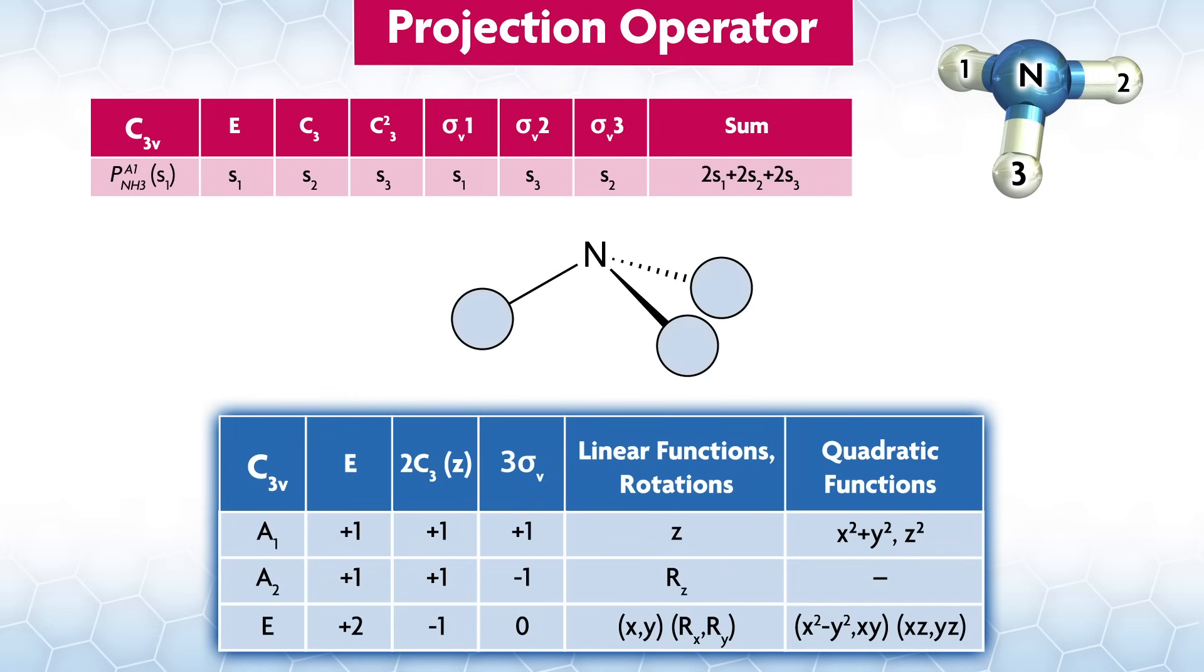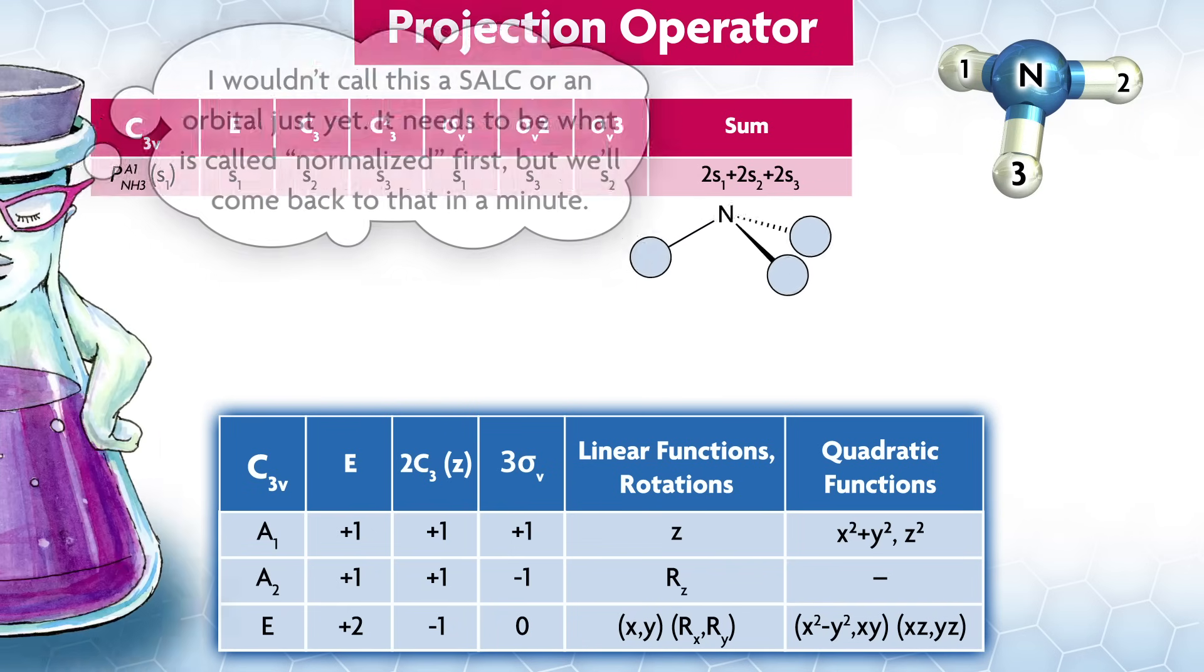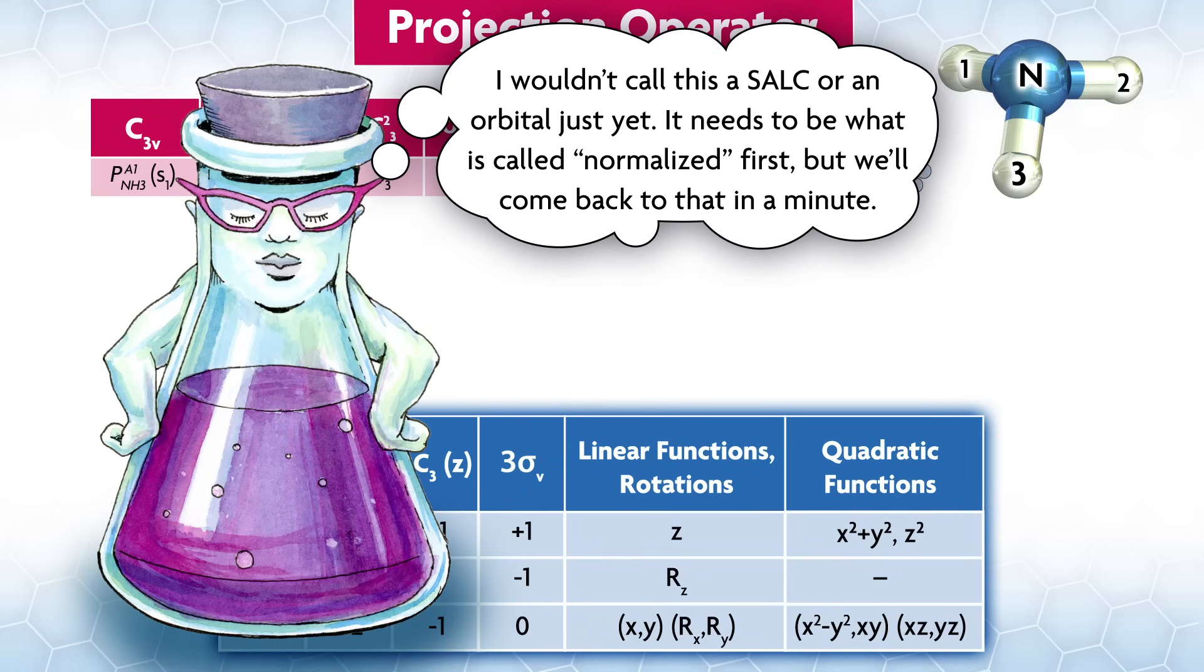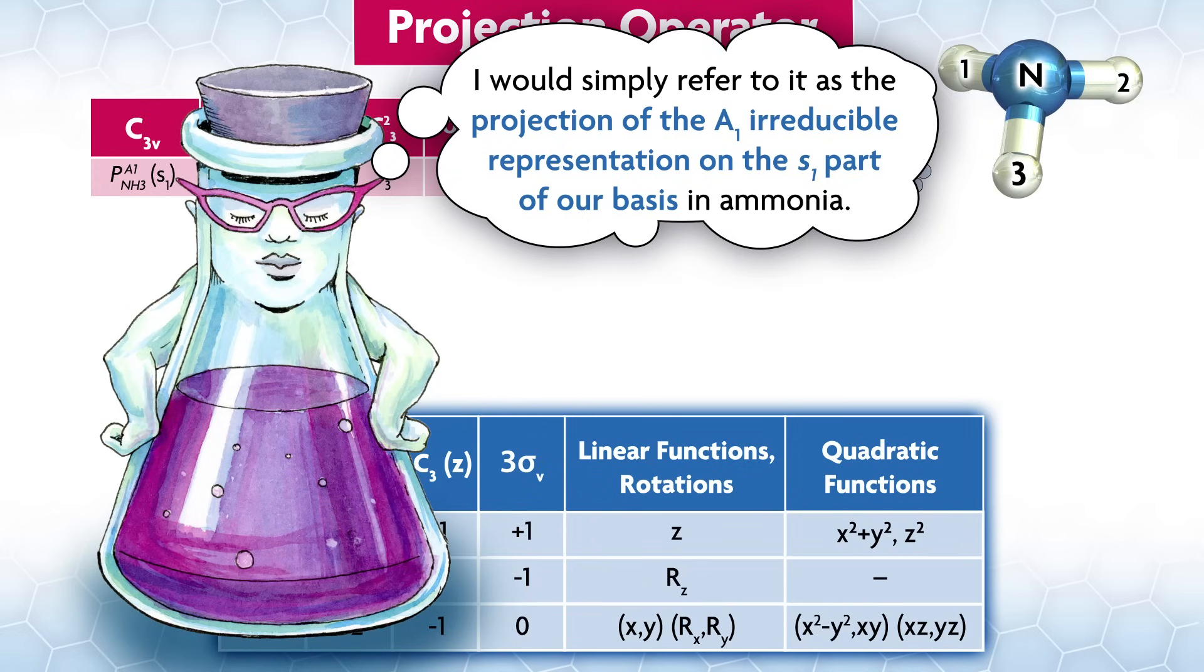From our projection, we found the s1 basis under a1 gives us something that has the same phase and all the same size on each hydrogen. Since this is the totally symmetric representation, it is unsurprisingly symmetrical. We can draw what the projection looks like by giving the orbitals the same color to represent the same phase and make them all the same size. I wouldn't call this a SALC or an orbital just yet. It needs to be what's called normalized first, but we'll come back to that in a minute. I would simply refer to it as a projection of the a1 irreducible representation on the s1 part of our basis in ammonia.